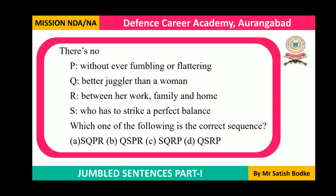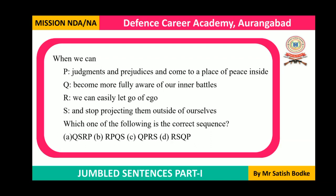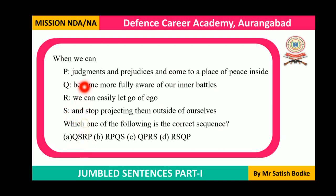Now let's go to example two. The sentence starts with 'when,' a conjunction, followed by 'we,' the subject, and 'can,' a modal auxiliary verb. After a modal auxiliary we always use the first form of the verb (V1). 'Judgment' is a noun — not the answer. 'Become' is V1, so it can be the first part of the sequence. 'We' is a pronoun/subject and 'and' is a conjunction, so the answer will not start with those.